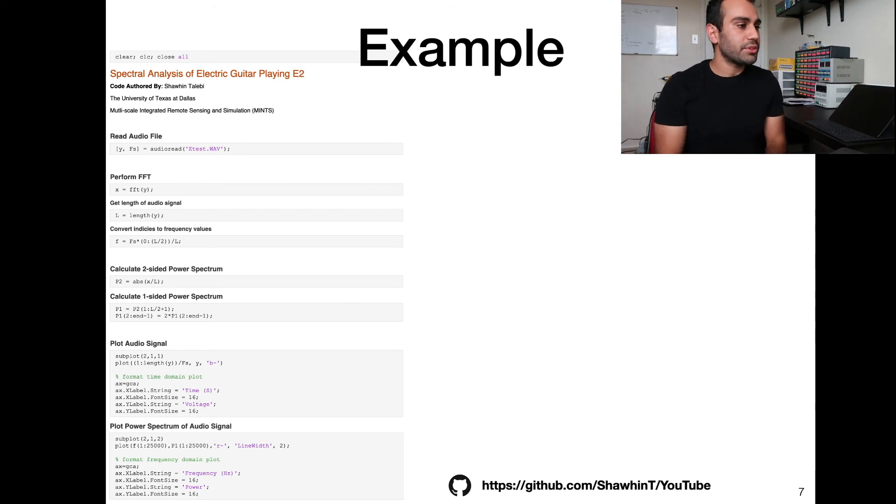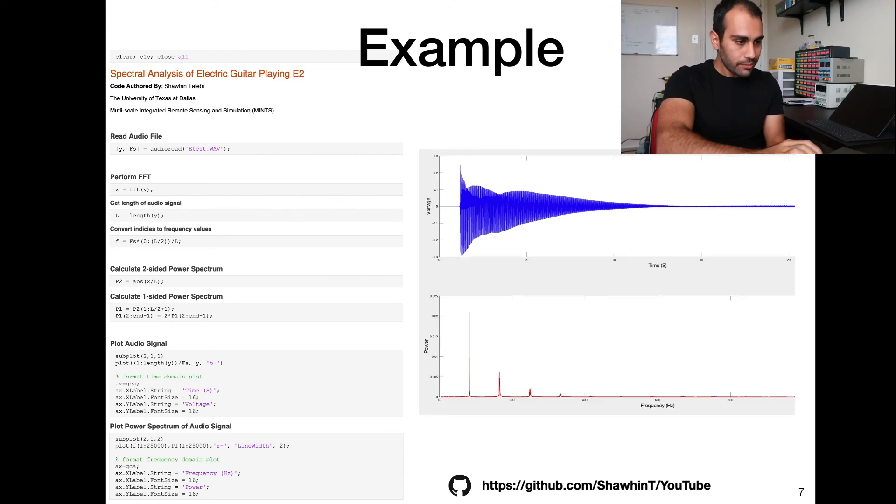Let's try to bring everything together with a concrete example. I wrote this example in MATLAB. The code is available at the GitHub page linked here and in the description. We're going to look at the spectrum of an audio signal. In this case, I'm just playing the low E string on an electric guitar. So we can see what that looks like. The first step is we read in our audio file. Then in one line of code in MATLAB, we can apply the fast Fourier transform. Here we're just defining some terms. We're getting the length of the audio signal. We're converting our frequency indices to actual frequency values. We're computing the two-sided and then from the two-sided to one-sided power spectrum in these lines here. And then we just plot everything.